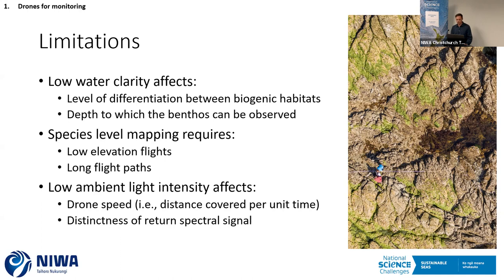Low ambient light intensity affects a couple of things. It affects the speed at which you can fly the drone — the lower the light intensity, the slower the drone has to go to avoid blur and avoid the camera's automatic settings increasing the ISO, which increases the graininess of the images. There are big effects on the crispness of images, but also on the distinctness of the spectral return. The less light going in, the weaker the spectral signal coming out. So targeting specific weather conditions becomes quite key to getting optimal products.